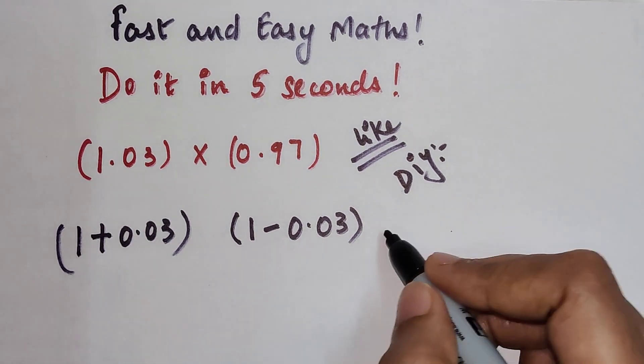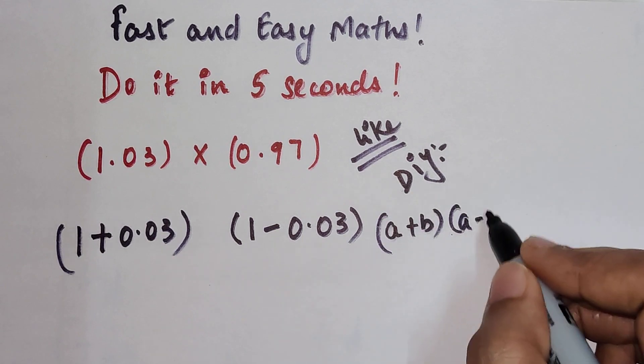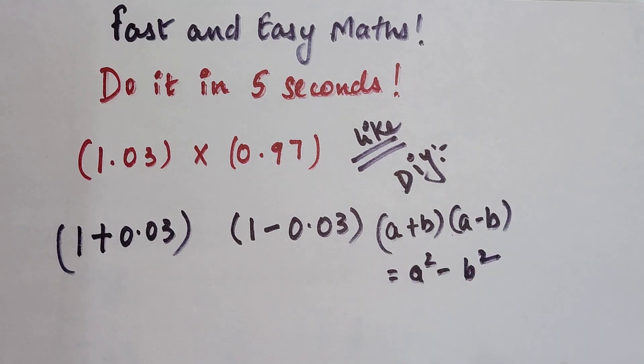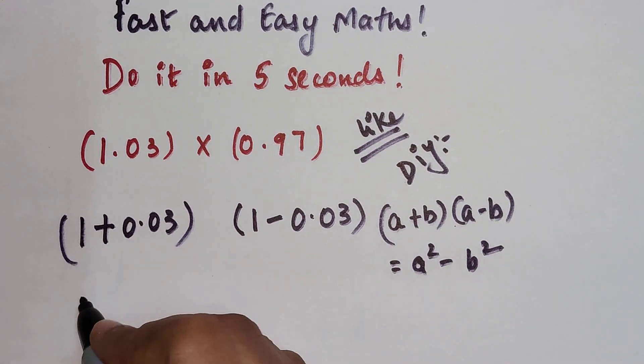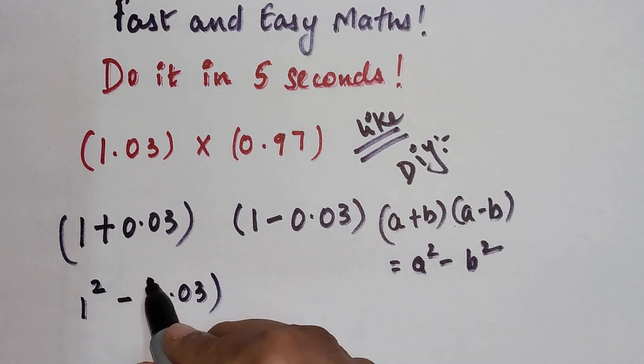So now if you look closely, this is of the form A plus B into A minus B, which is nothing but A squared minus B squared. Correct, so I will get 1 squared minus 0.03 the whole squared.